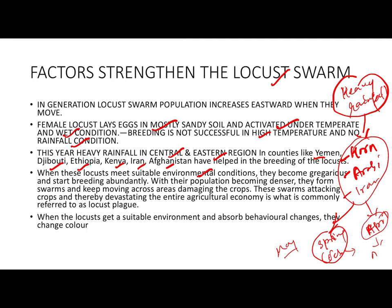As the locust population becomes denser, they form swarms and keep moving across areas, damaging crops wherever there is green cover. The eastern part is relatively greener compared to the western part, so they move eastward. These swarms devastate the entire agricultural economy, which is why the event is called a locust plague. The first wave enters India in February, the second wave in May.